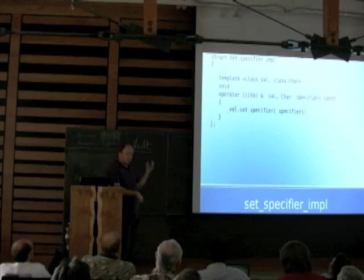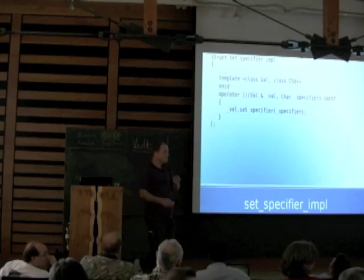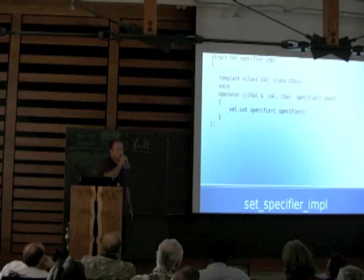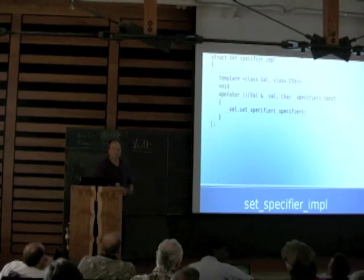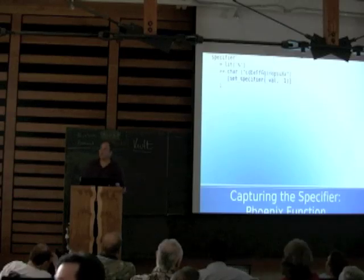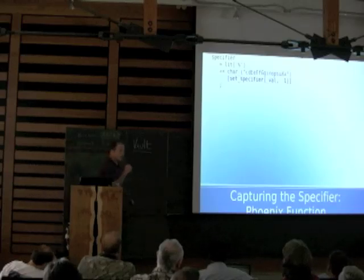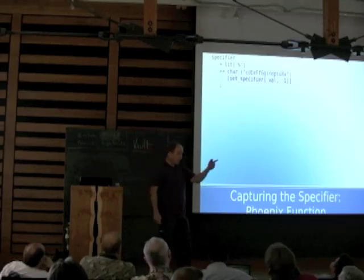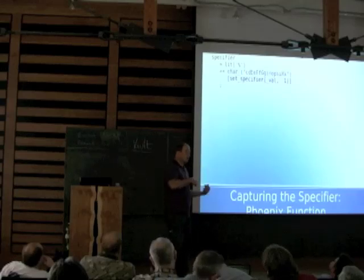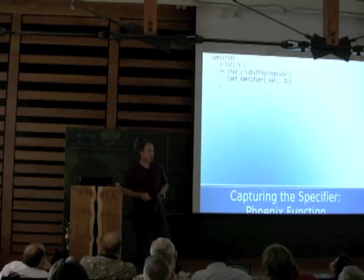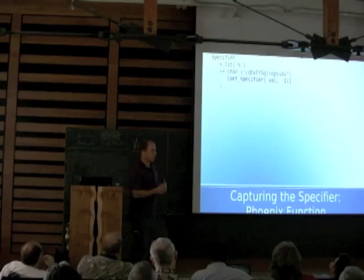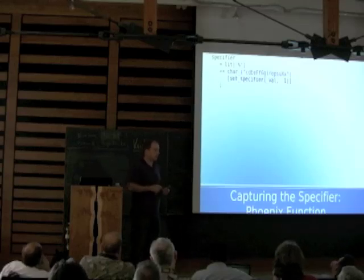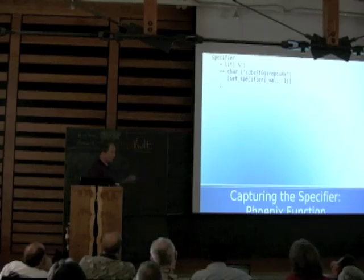Any questions on what we've covered so far with the conversion specifiers? A mechanical question: is the _1 placeholder a boost::bind placeholder or a phoenix::bind placeholder? It's actually a Spirit placeholder — boost::spirit::_1 — which is also brought into the qi namespace so you can have a namespace alias qi and say qi::_1 to disambiguate it. That's been one of the problems where Proto, MPL, boost::bind placeholders all need to be combined to try to come up with one set, and that has yet to be resolved.